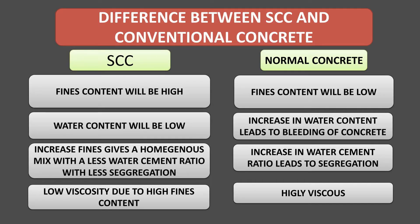What are the main differences between SCC and conventional concrete? In SCC, the fines content is very high, whereas in normal concrete it is comparatively low. In SCC, the water content is very low, and flowability is achieved through superplasticizers and viscosity modifying agents. In normal concrete, increasing the water-cement ratio causes bleeding, whereas in SCC, increased fines give a homogeneous mix with a lower water-cement ratio and less segregation.